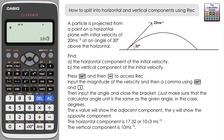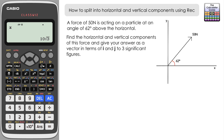Let's look at a second example. This time we have a force of 50 newtons acting on a particle at an angle of 62 degrees above the horizontal. Again the angle is above the horizontal, so the x result will be the horizontal component and the y result will be the vertical component. We need to give the answer as a vector in terms of i and j to three significant figures.